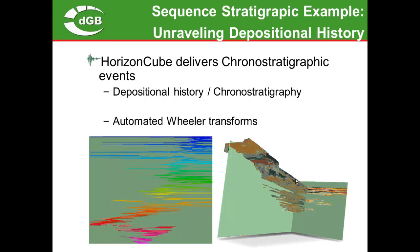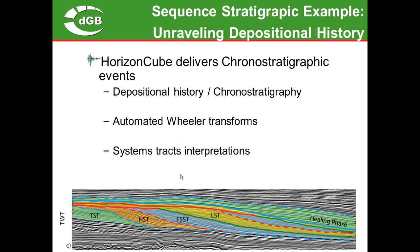In the Wheeler transformed domain we can see how far each unit has been preserved and how the depositional center shifted over geologic time — first going basinwards, then landwards, then basinwards, landwards, basinwards, and so on. This cyclic behavior helps us do a systems tract interpretation, which is one of the main goals in sequence stratigraphic interpretation. It helps us understand the depositional environment and identify possible positions where we may find stratigraphic traps.